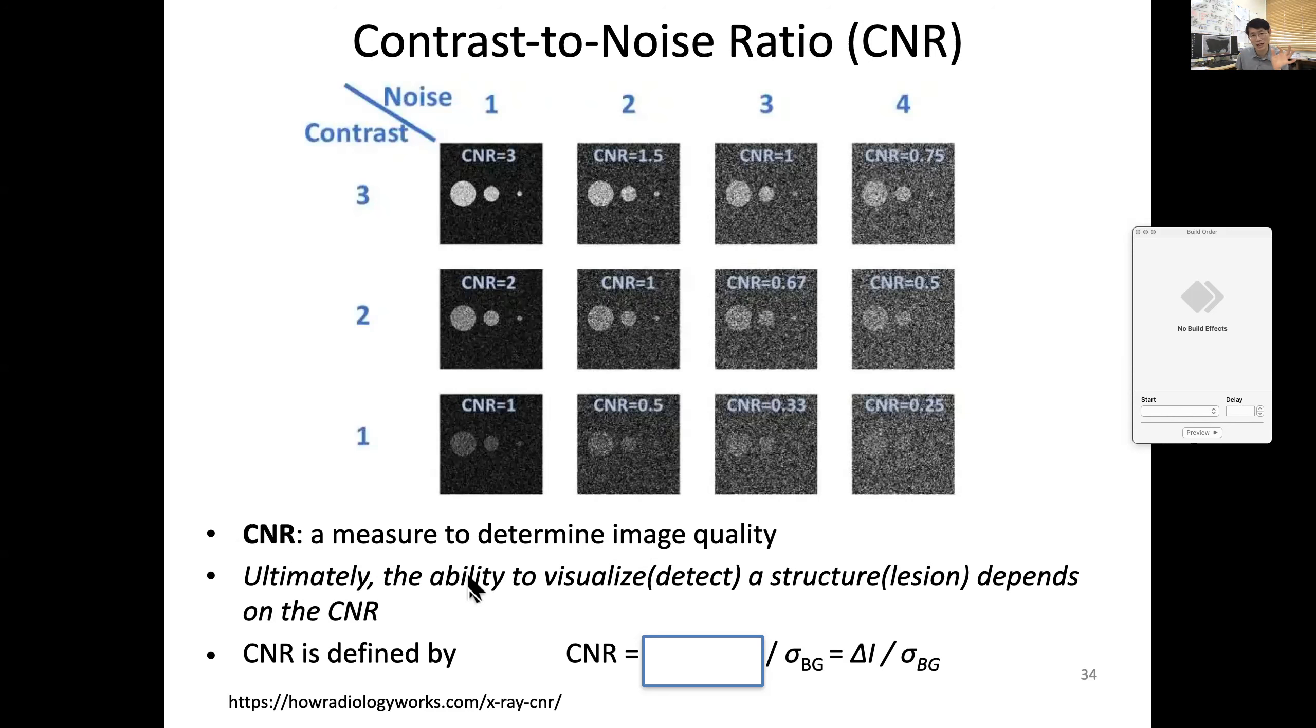When we talk about determining image quality, especially visualizing or perceiving the presence of object shape with respect to the background, it's better to use contrast-to-noise ratio. Ultimately, the ability to visualize a structure depends on contrast-to-noise ratio. If you're a radiologist trying to find a tumor in your x-ray image, you really depend on contrast-to-noise ratio.